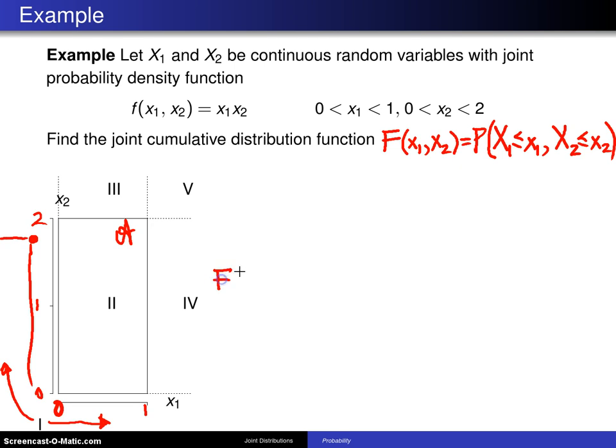So when we start to construct this joint cumulative distribution function over its five regions, and the way you get these five regions is this is where the limits wind up changing.